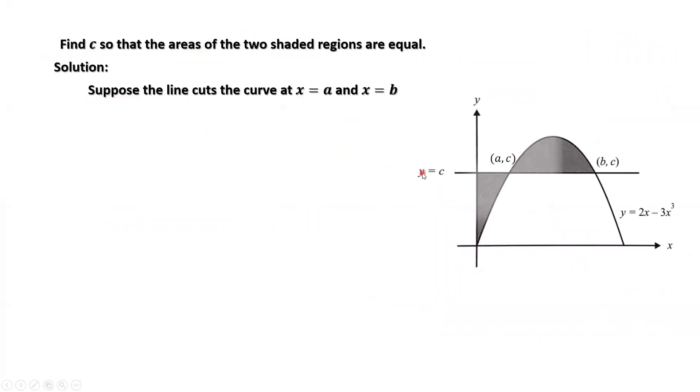Suppose the horizontal line y equals c cuts this curve y equals 2x minus 3x to the power of 3 at x equals a, x equals b. The area of this shaded region is the integral of y minus c, y is 2x minus 3x to the power of 3 from a to b.